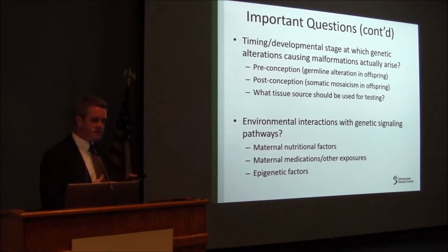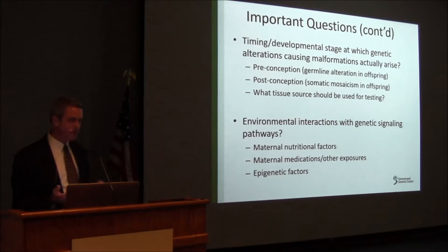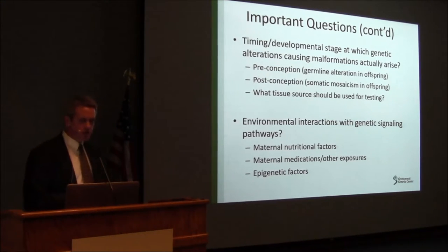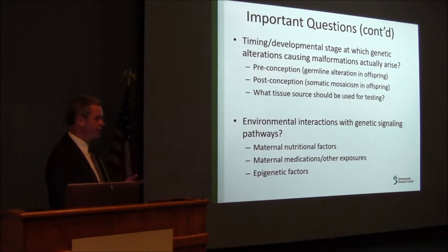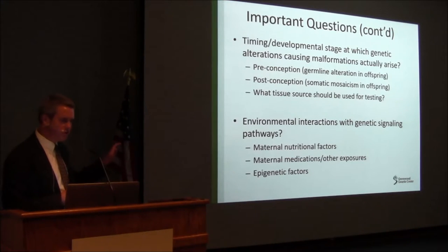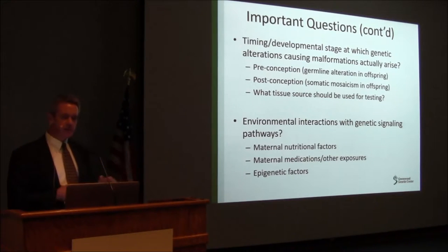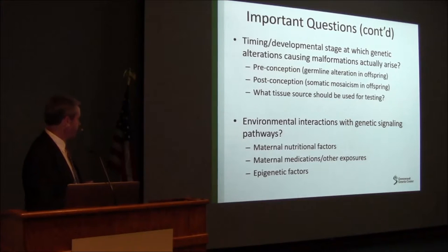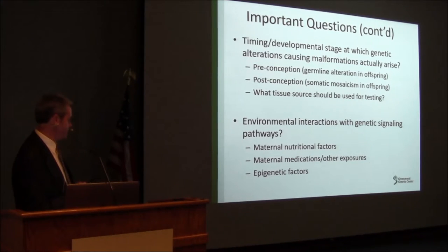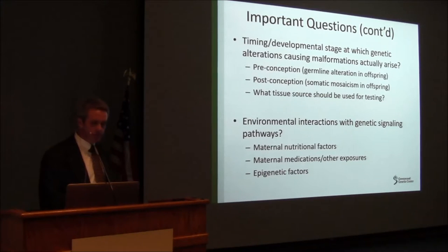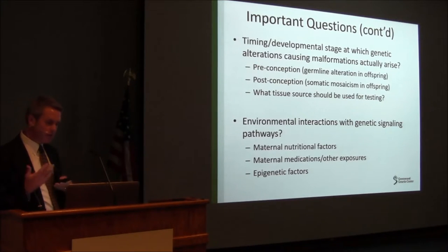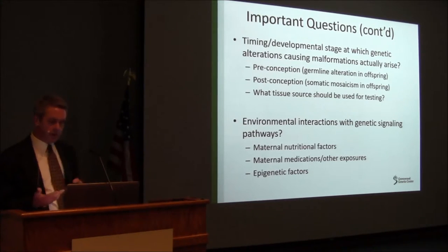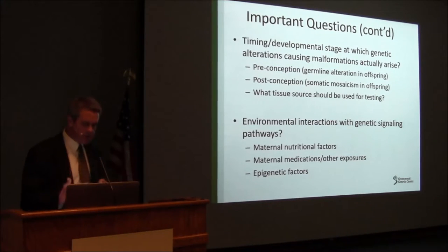Other important questions concern the timing or developmental stage at which gene alterations causing malformations actually occur. Many may occur preconception and thus be identifiable in the germline of an affected individual. But some may occur post-conception, existing in a somatic mosaic state, meaning you might only find them if you pick the right tissue source to study. This raises the question of what tissue source should be used for genetic testing. Finally, there's the issue of environmental interactions — how the environment interacts with genetic signaling pathways during development, how maternal nutrition modulates that, how maternal medications or exposures affect it, and how epigenetic factors play into all of this.